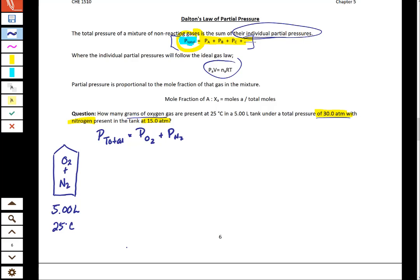So what we can do is solve for the pressure of oxygen by saying that we have 30 atmospheres of total pressure, we don't know the pressure of the oxygen, and there's 15 atmospheres with respect to nitrogen. So the pressure of oxygen is going to be 15 atmospheres.